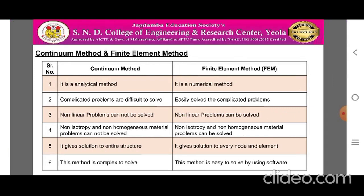Next is the comparison between Continuum Method and Finite Element Method. The Continuum Method is a type of analytical method used for the solution of problems of an entire structure. Point one: the Continuum Method is an analytical method, while the Finite Element Method is a numerical method. Point two: in case of Continuum Method, complicated problems are difficult to solve, while in case of Finite Element Method, any complicated problem can be solved easily.